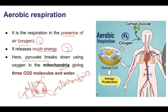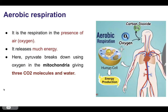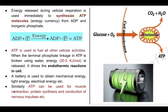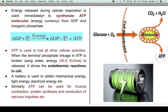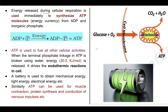In the mitochondria, in the presence of oxygen, each pyruvate molecule produces three molecules of carbon dioxide and water. So the products of aerobic respiration are carbon dioxide, water, and a large amount of energy — 30 to 32 ATP. The energy released in cellular respiration is immediately used for ATP synthesis.